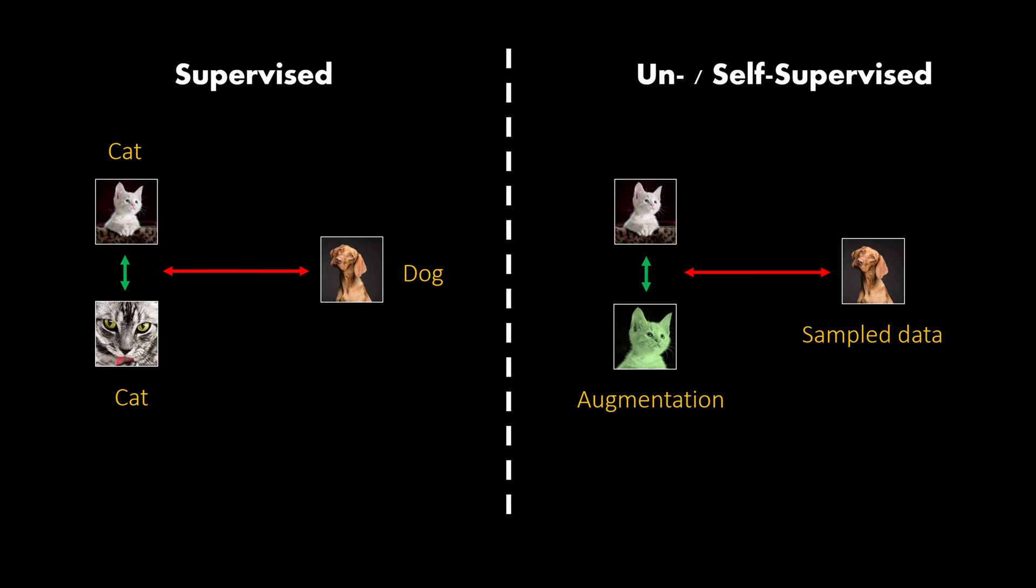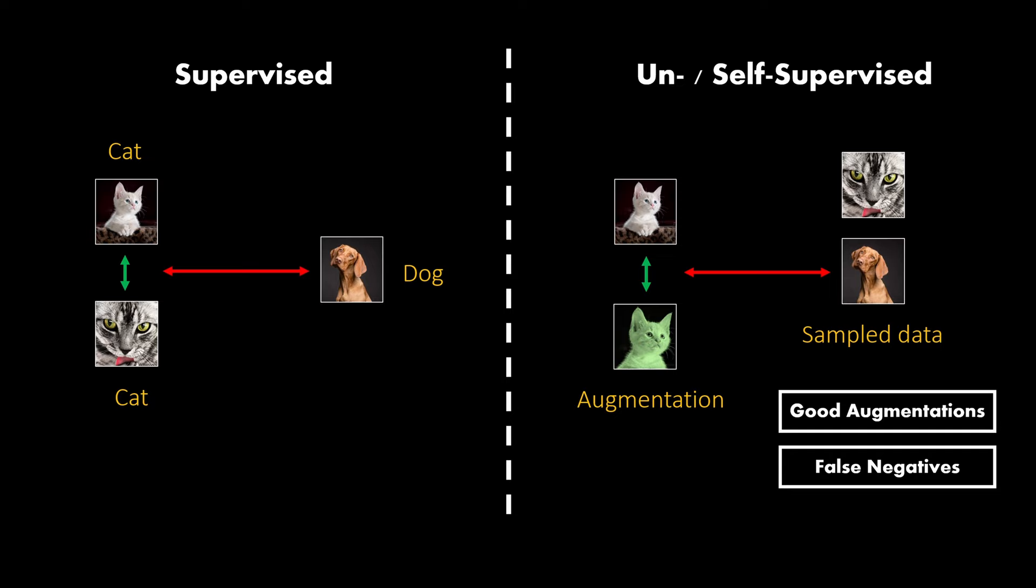Now there are two important aspects with this strategy. First, the quality of the representations heavily depends on good augmentations. The augmented images need to be close enough to the original image but still far away from other samples. Secondly, it can happen that we get false negatives. For example, if we have another cat image as a negative instance. There are many variants of self-supervised contrastive learning that already handle these points. We will just have a look at the classical methods here.